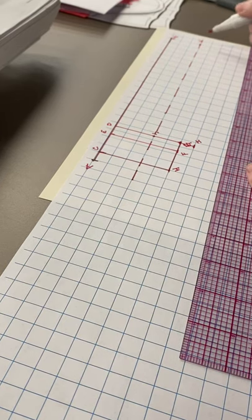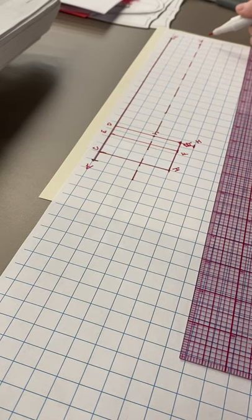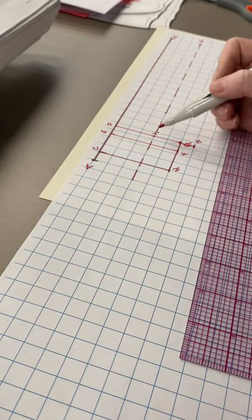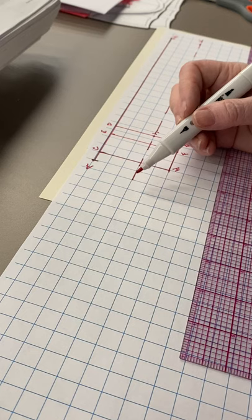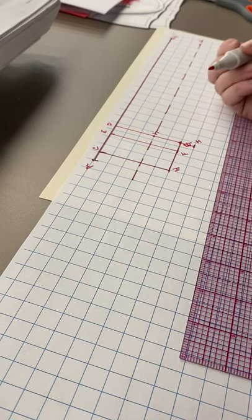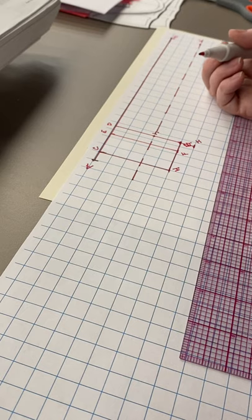Alright, so we have K down here at our hemline and we've extended J all the way up to the waist, but we're not going to do anything with it currently.